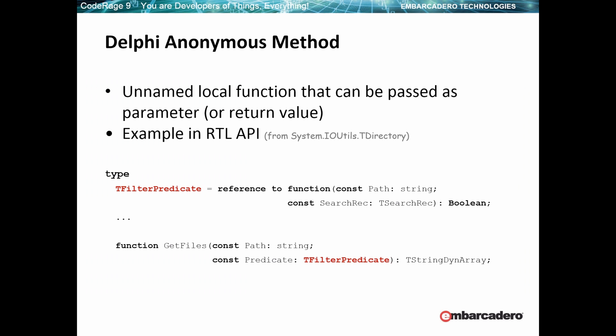So what is it? It's a local function — an unnamed local function that you can pass as a parameter or as a return value. The way it's declared, using the examples from TDirectory here, here's a filter predicate. It says 'reference to' — that's the key. The 'reference to' means you're declaring an anonymous method, and the anonymous method is a function that takes a string and a TSearchRec and returns a boolean.